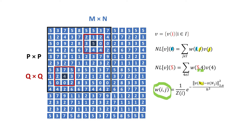N sub i is the square neighborhood of fixed size centered at i as shown here, while N sub j is a square neighborhood of fixed size centered at j as shown here. The parameter a is a positive value representing the standard deviation of the Gaussian kernel, and this is the Gaussian weighted Euclidean distance. The parameter h acts as a degree of filtering, and Z(i) is the normalizing constant given by this equation.